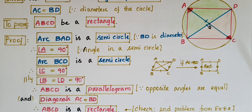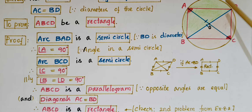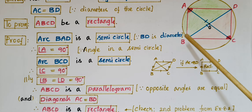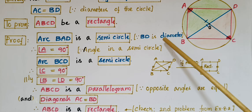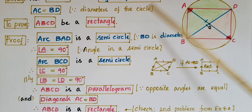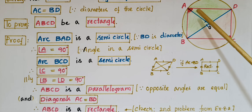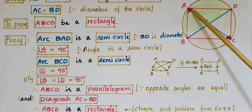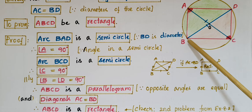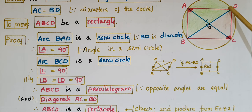To prove ABCD is a parallelogram, we have to prove that opposite angles are equal in this quadrilateral. For that, first take arc BAD — this is a semicircle because BD is a diameter. Arc BAD is a semicircle, and we know that in a semicircle each angle is 90 degrees, so angle A is equal to 90 degrees. And if you take arc BCD, BD is a diameter, so angle C is equal to 90 degrees.